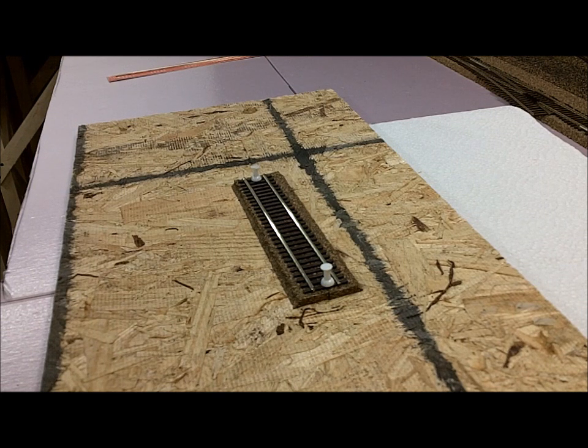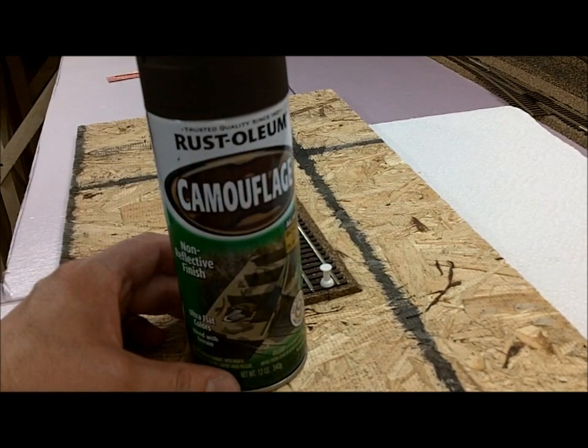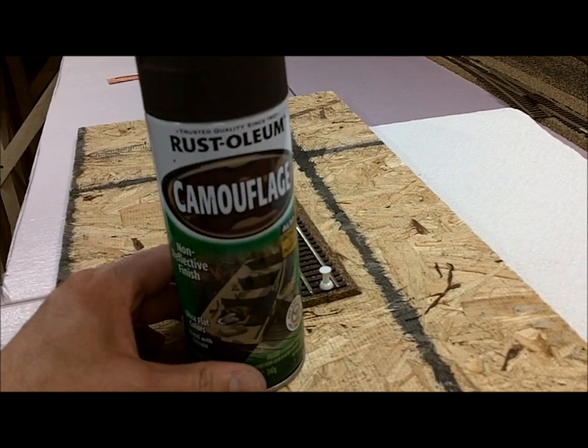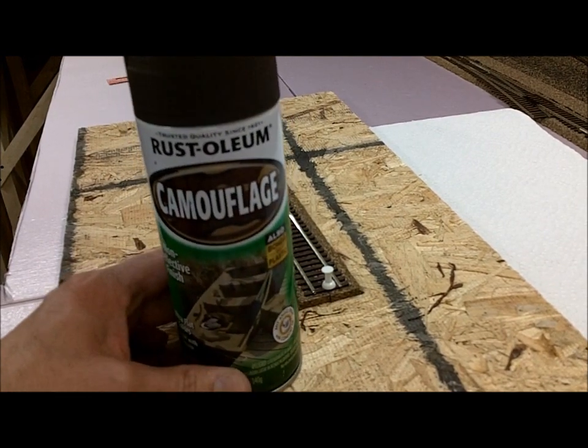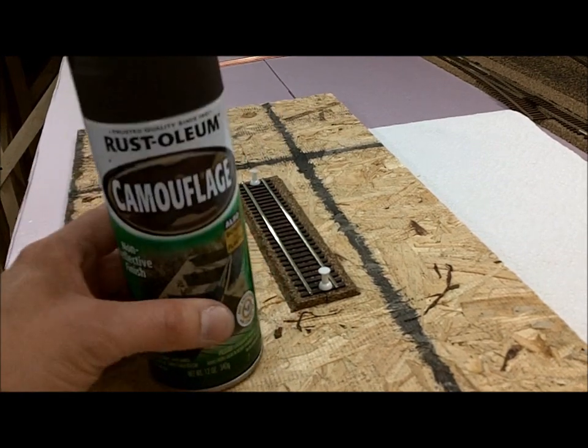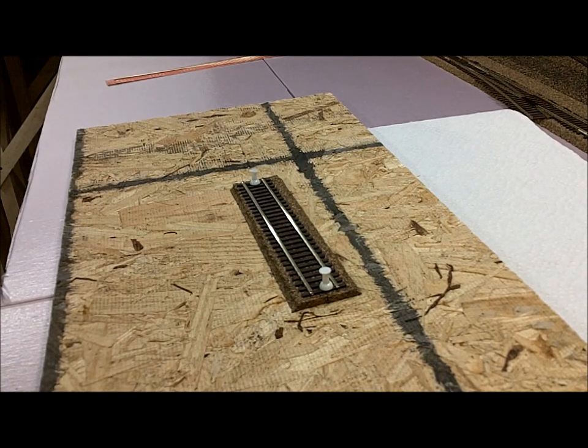The first thing you want to get is a can of Rust-Oleum camouflage brown. You can get that at Walmart or wherever. I got this at Walmart. I think it was four dollars and something for a big can of it, which will go a long ways.